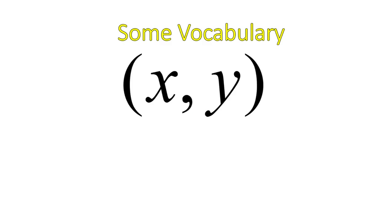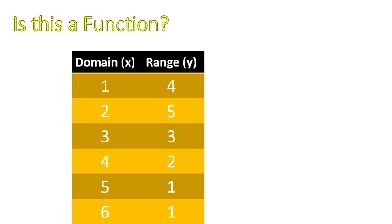Some vocabulary, just so that you're aware. We have our x and our y coordinates. This is an ordered pair. We sometimes call the x value the input, and the y value is the output. Sometimes we'll call our x value our domain, and our y value is our range. These are just different ways to say the same thing. So I just want you to be aware of those moving forward. And I'll try and use all of them so that you get comfortable with that vocabulary.